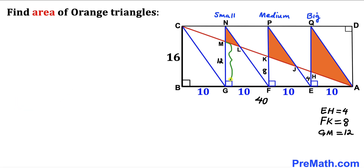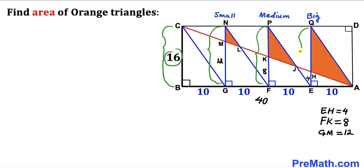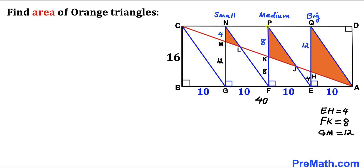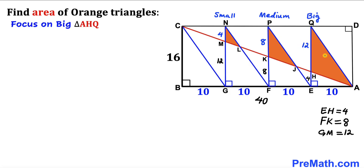Now let's make an observation. The height of the rectangle is 16. Since GM = 12, the remaining length is 4. Likewise, the remaining length PK is 8, and the length HQ is 12. This sets up the heights we need for computing the orange triangle areas.